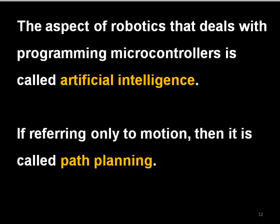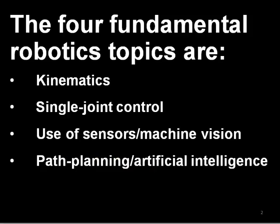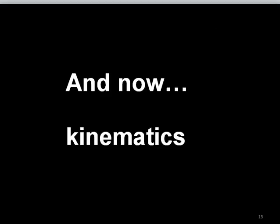We'll look at both path planning and more complex artificial intelligence in this class. In this class, we'll be looking at all four fundamental robotics topics — kinematics, single joint control, the use of sensors and machine vision, and path planning and artificial intelligence. But we're going to start today, and for the first month or so of class, looking specifically at kinematics. In the next video, I'll be introducing you to some robotics terminology, specifically that terminology related to the robot's links and joints.